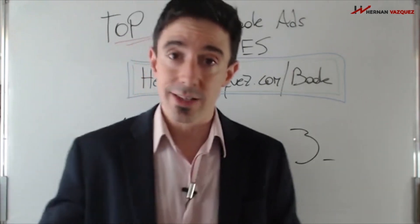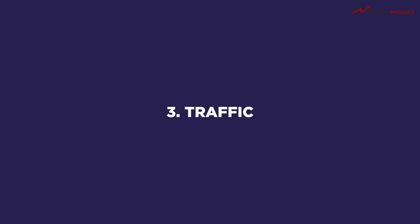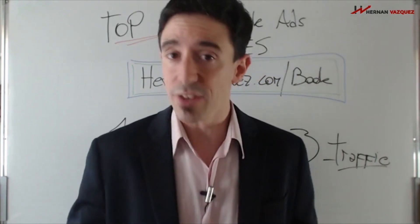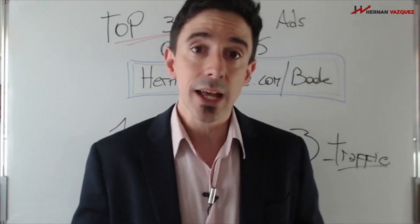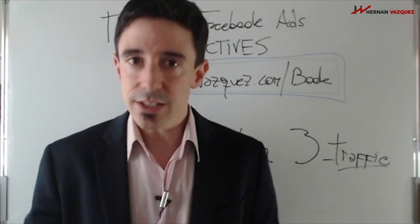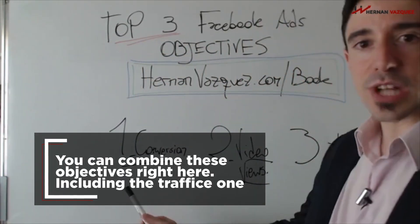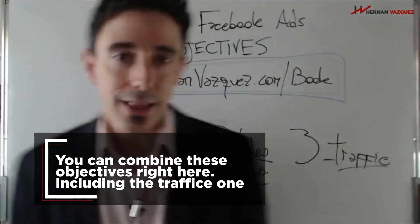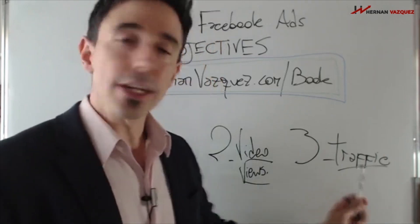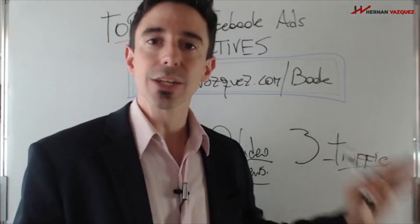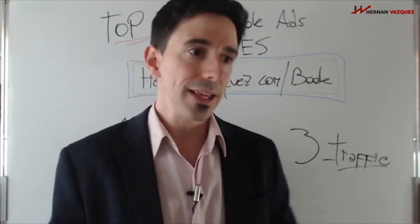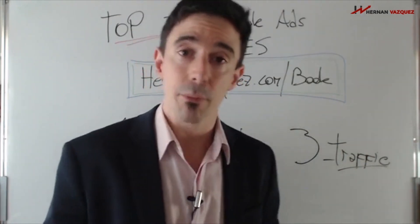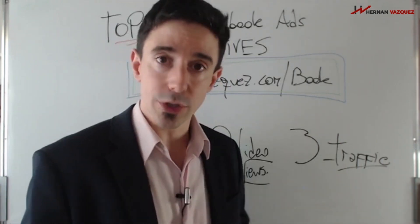Number three, which is going to be a surprise to many of you, is traffic. Now, I just told you that if you choose the traffic campaign objective you will get a lot of clickers and traffic to your page, but that doesn't necessarily mean they convert. But here's the good news — you can combine these objectives, including traffic. The only reason I would use a traffic campaign is when I'm retargeting people: someone who watched my webinar but didn't buy, or someone who landed on my order page but didn't buy. That's how I retarget people — with traffic and also with conversions.